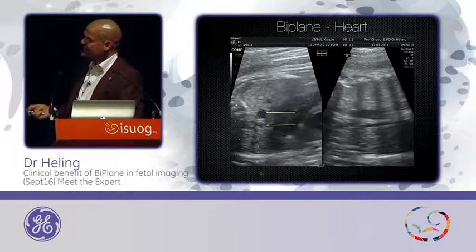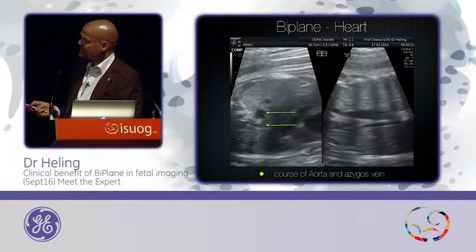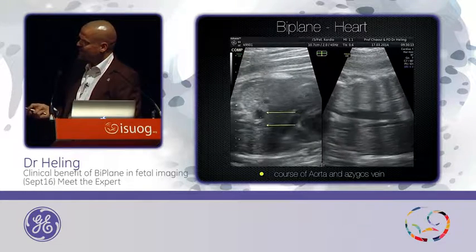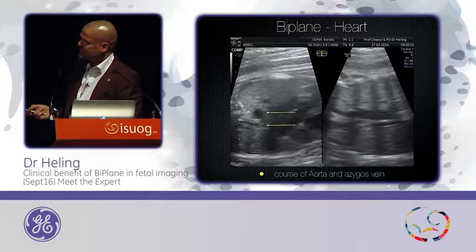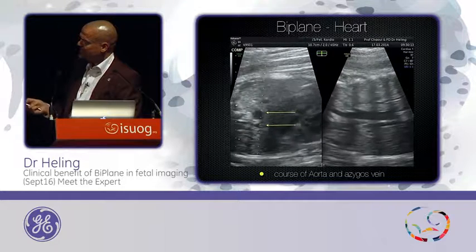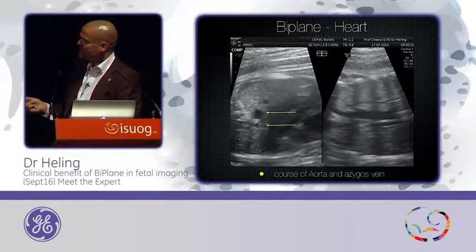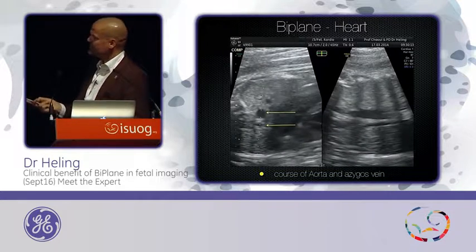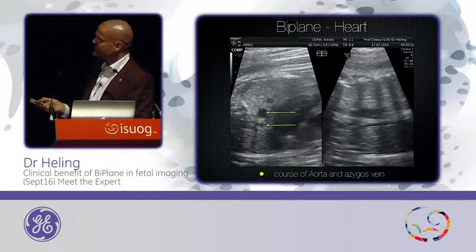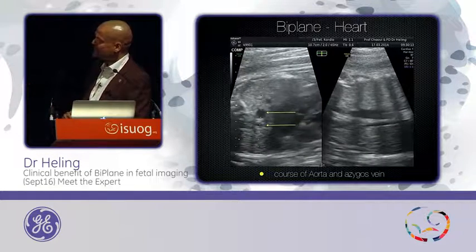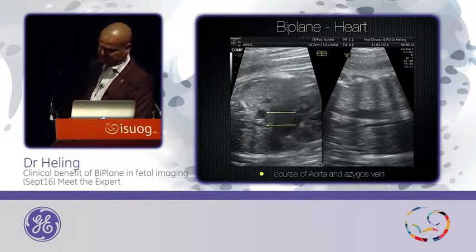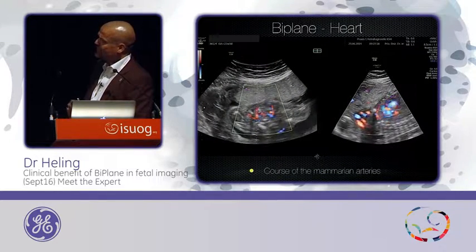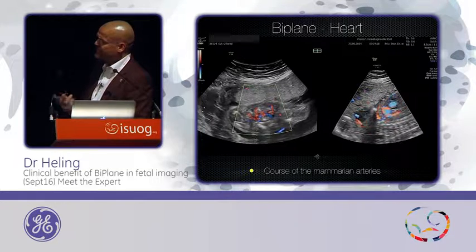This is a cross-sectional view through the chest at the level of the four-chamber view — the area behind the heart. You see the aorta and the azygos vein. I put the camera line through and you can compare: you have the normal aortic diameter, you see the smaller diameter of the azygos vein, and you realize both vessels on different sides. This is a description of the normal anatomy in the chest. You can also use BiPlane to examine unusual planes or images.